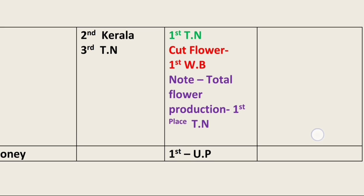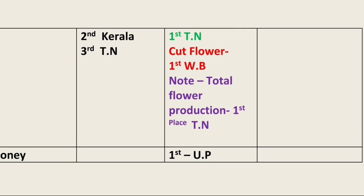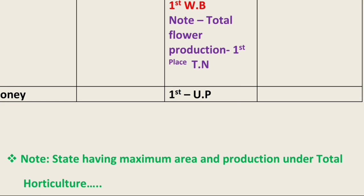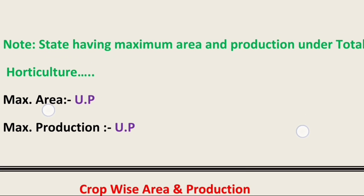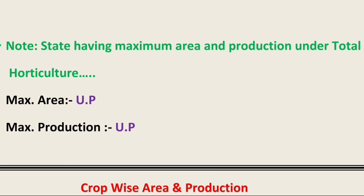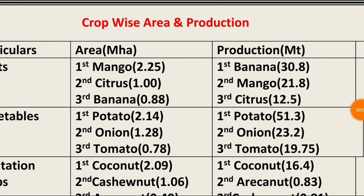In terms of honey, the maximum production is contributed by Uttar Pradesh. Another important question: the state having maximum area and production under total horticulture — meaning including everything: fruits, vegetables, flowers, ornamentals, and spices — is Uttar Pradesh.